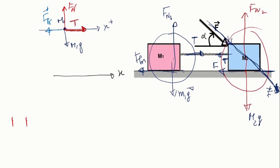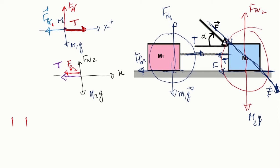For object M2, we have the normal force Fn2, the weight M2g, tension T from object 1, and friction force 2 — which is in the same direction as tension, opposing the motion. Friction force on object 1 is called friction force 1, and friction force on object 2 is called friction force 2. We also have the normal force, the weight, and the applied force F.